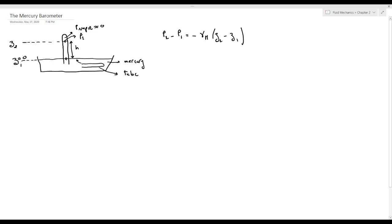P1 below lies on the same level as the atmospheric pressure level, so we can say that P1 is equal to P atmosphere, same level same pressure as we said before. And P2 is equal to P vapor which is approximately 0.